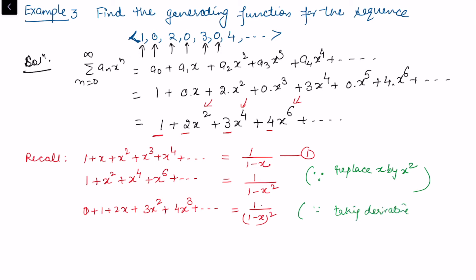We do the similar step as before: taking the derivative gives 1/(1 - x)². Now we do the replacement x → x².